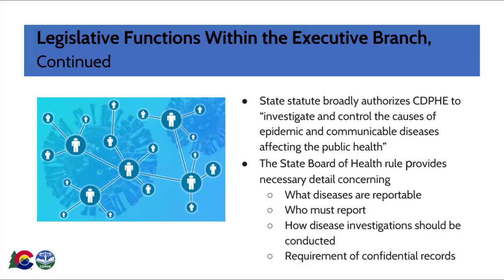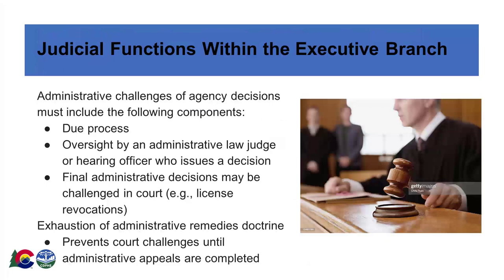All of these quasi-legislative functions — including executive orders, public health orders, and rules — have the force and effect of law when properly issued, meaning that they result in the creation of enforceable requirements. State law also requires the executive branch to take on some quasi-judicial functions. For example, when an agency proposes to revoke a license, the State Administrative Procedure Act requires that the licensee be provided due process, including advance notice of the proposed revocation and an opportunity for a hearing to challenge the decision. When the hearing requirements in the Administrative Procedure Act apply, no court challenges can be heard until the decision following the hearing at the agency level is final.